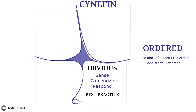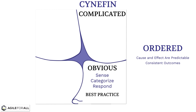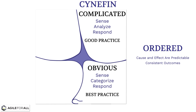On the top right, the systems are more complicated, and cause and effect are predictable, but can only be understood through logical analysis or through bringing in experts. Instead of sense-categorize-respond, here we have a decision-making process of sense-analyze-respond. This is the domain of good practice, meaning there are probably multiple right ways to address the problem, and forcing a single best way will cause people to be frustrated and to disengage.